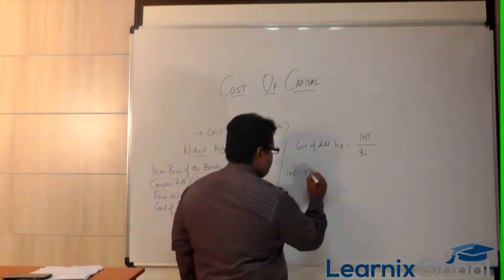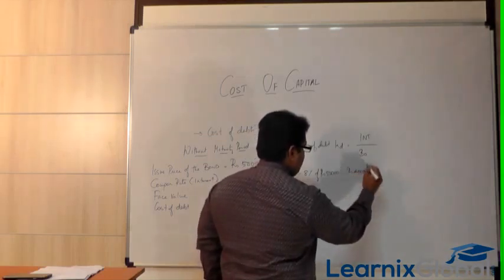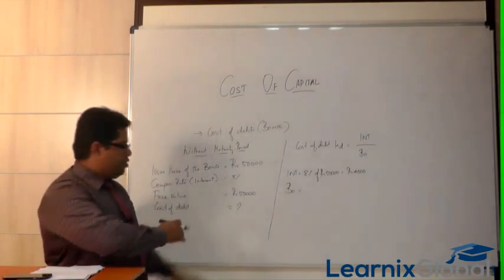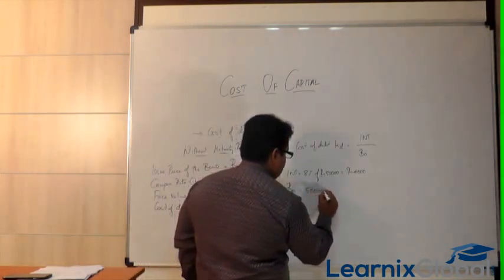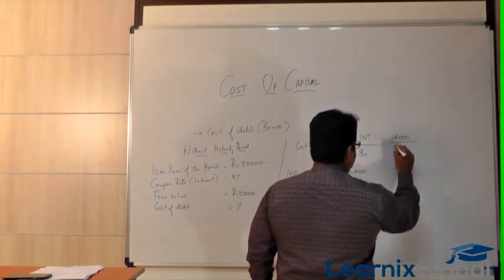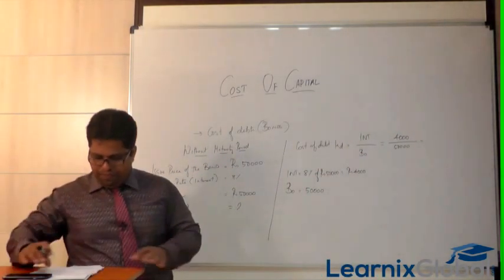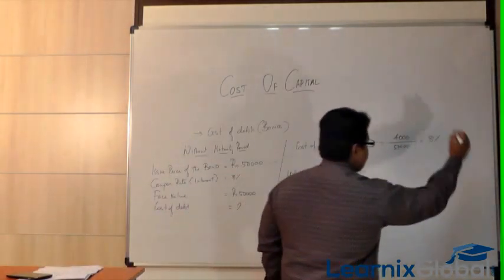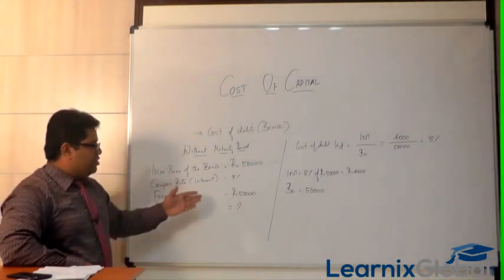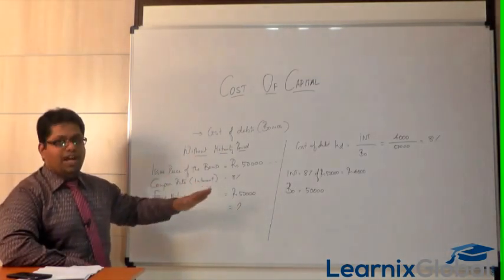Applying the formula: Kd = 4,000 / 50,000 = 8%. The cost of debt equals the coupon rate, which is 8%. This makes sense because when there are no variables like premium, discount, or tax, the issue price and face value are the same, so the cost of debt equals the coupon rate directly.